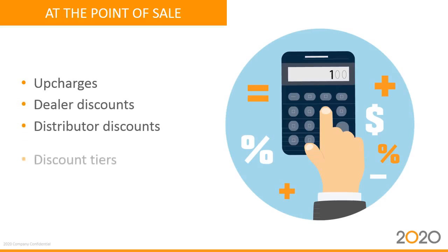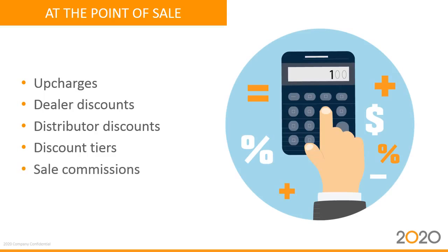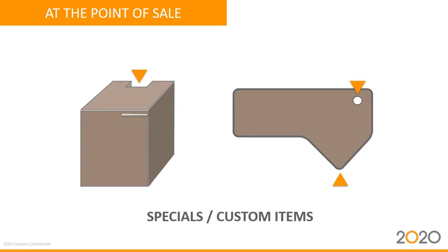And then there's pricing. You've got upcharges for certain features and not for others. You've got dealer discounts, distributor discounts, multiple discount tiers, sales commissions. And again, if the system is not up to date, or perhaps not able to handle the complex pricing structure that you use, then the risk for making pricing errors is very high. And if your pricing is not in a system but rather printed in a catalog, then it's even harder to make sure that it's correct. And last but not least, you have specials or custom items. How do your dealers convey specials to you? Is it easy for them to add specials to an order?